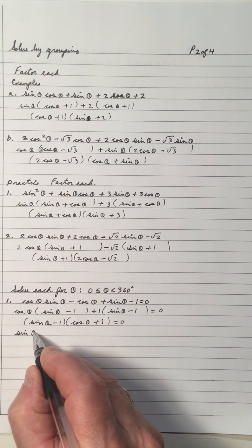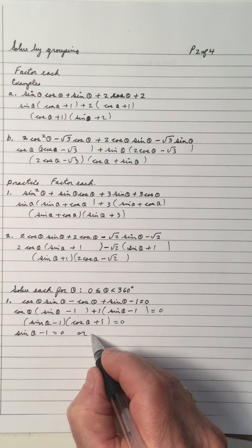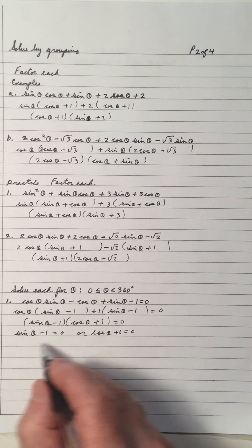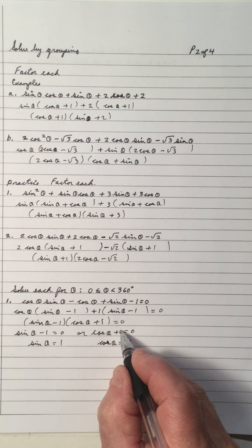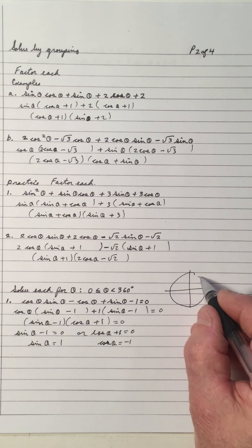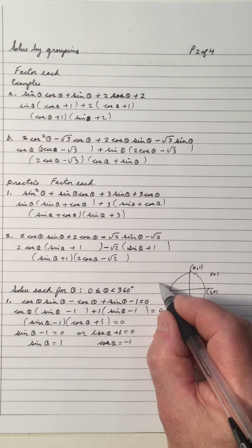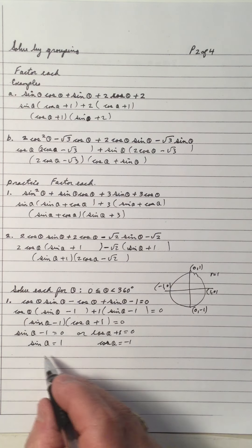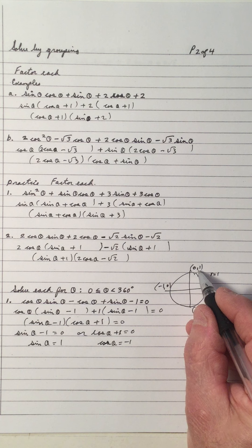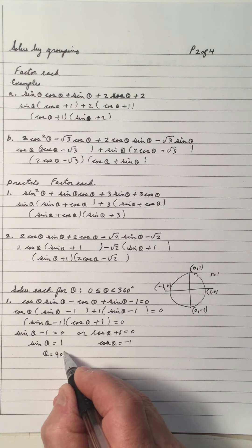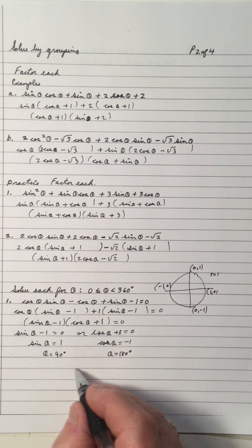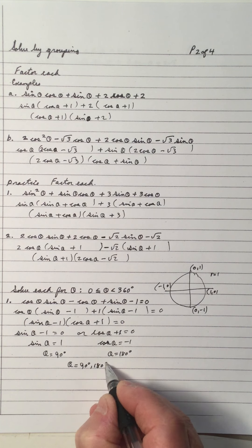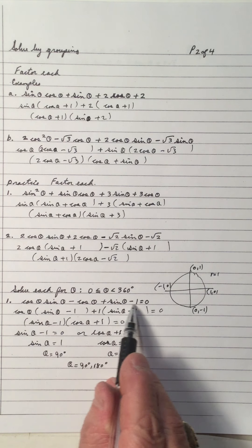So sine theta minus one is common in both expressions. When we take that out, we get cos theta from the first and plus one from the second. Now we have them factored with two factors, so we let each factor equal zero. Cosine makes it a quadratic. So sine theta equals one, and cos theta equals negative one. Using the unit circle — radius one, x zero y one, x negative one y zero — sine is the y, so y equals one gives theta equals 90 degrees. Cos is x, so x equals negative one gives theta equals 180 degrees. The answers are 90 and 180.